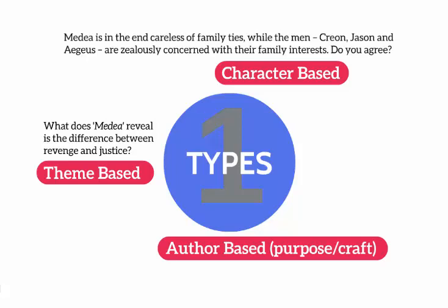The other type of question is a character-based question. For example: 'Medea is in the end careless of family ties, where the men — Creon, Jason, and Aegeas — are zealously concerned with their family interests. Do you agree?' This question may on the surface appear to be asking you to talk about specific characters, but it's actually wanting you to go beyond that and look at what they represent. It's a men versus women sort of question, family ties versus family interests. So you want to move beyond just the characters.